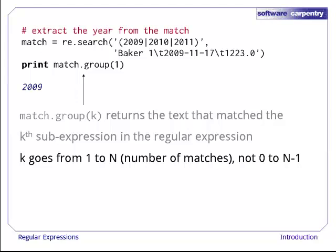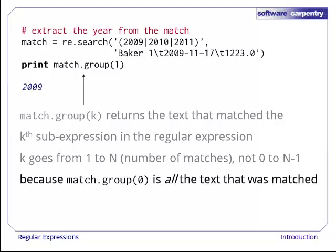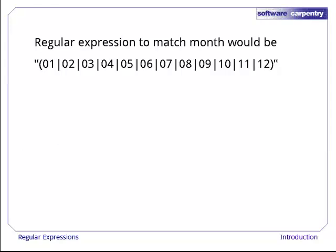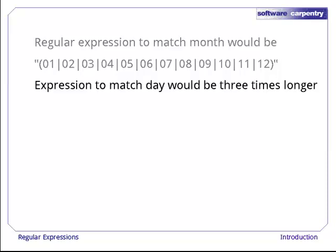For example, match.group returns whatever matched against the pattern inside the first pair of parentheses counting from the left. It's important to note that the first sub-expression is extracted with match.group of one. The second with two and so forth. When we are looking at groups, we count from one to n rather than zero to n-1 as is normal in the rest of Python. The reason for this is that match.group returns all of the text that the entire pattern matched. What if we want to match the month as well as the year? A regular expression to match legal months would be 01 or 02 or 03 or and so forth all the way up to 12. The expression to match the day would be three times longer. This is pretty cumbersome. It's hard to type and more importantly hard to read.